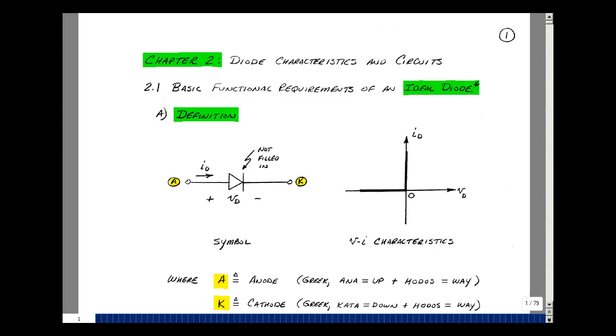This lesson deals with an ideal diode and an analysis technique called Assume States. You can find these notes in the ECE302 eBook in Chapter 2, starting on page 1. Like we did in ECE201, we started the course by defining an ideal element. In this course, we'll be looking at diodes and transistors, so let's define an ideal diode.